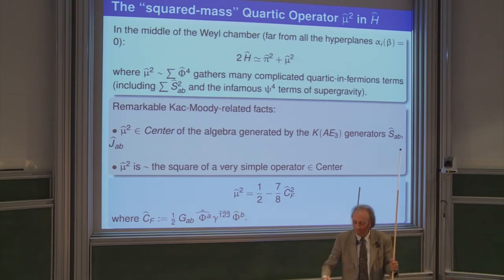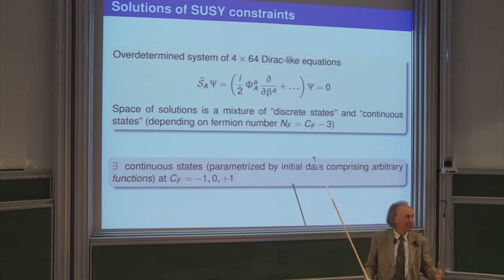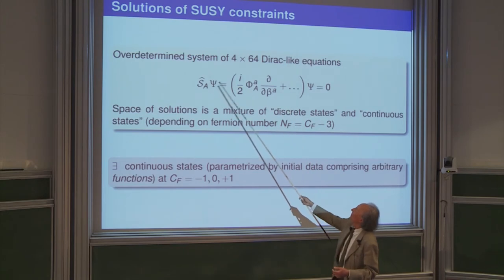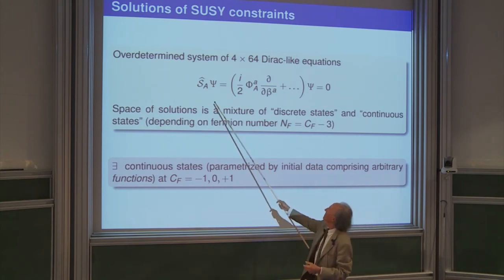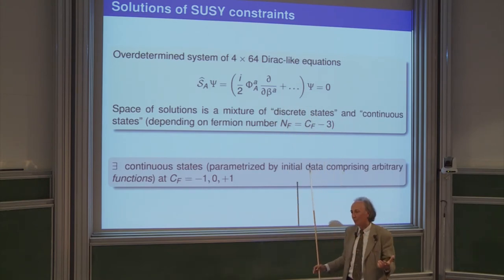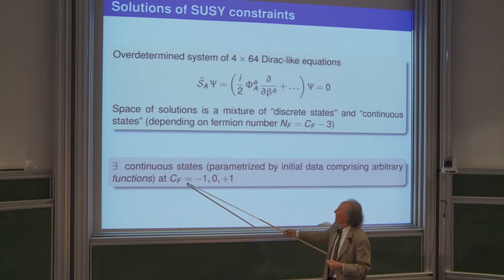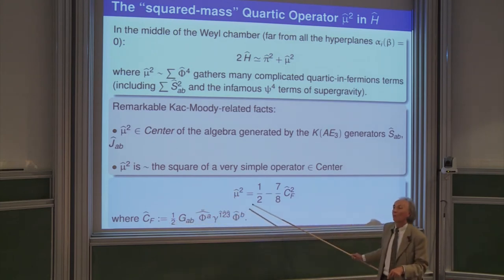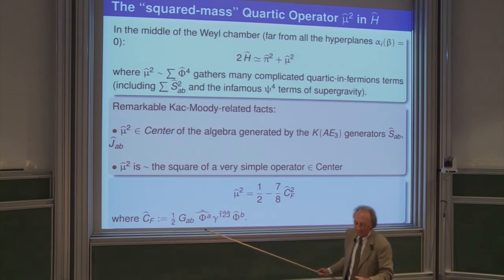One can then discuss explicitly the solutions for the quantum universe described by supergravity: you need to solve this Dirac-like equation for 64-component column vectors of functions of three variables satisfying 4×64 equations. The various quantum states are parameterized by this operator — a fermion-number operator taking values from minus 3 to plus 3.